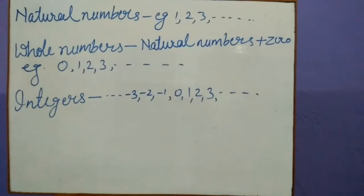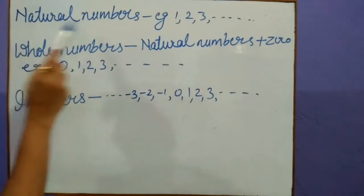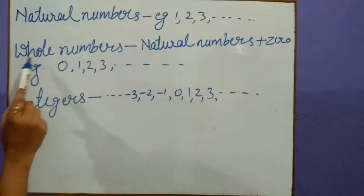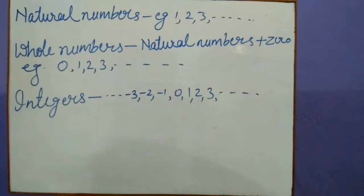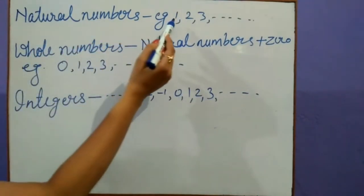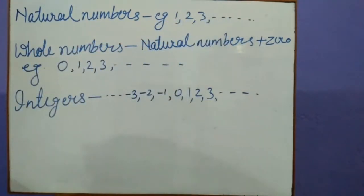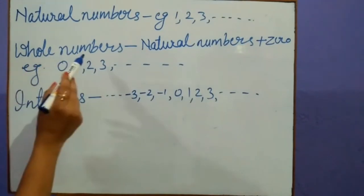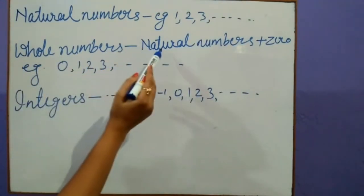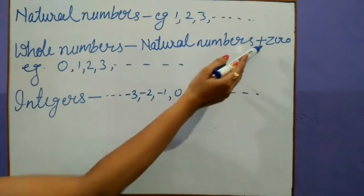Before doing the exercise, I want to remind you about natural numbers, whole numbers, and integers. The numbers 1, 2, 3 and so on are natural numbers. Whole numbers are natural numbers plus 0.